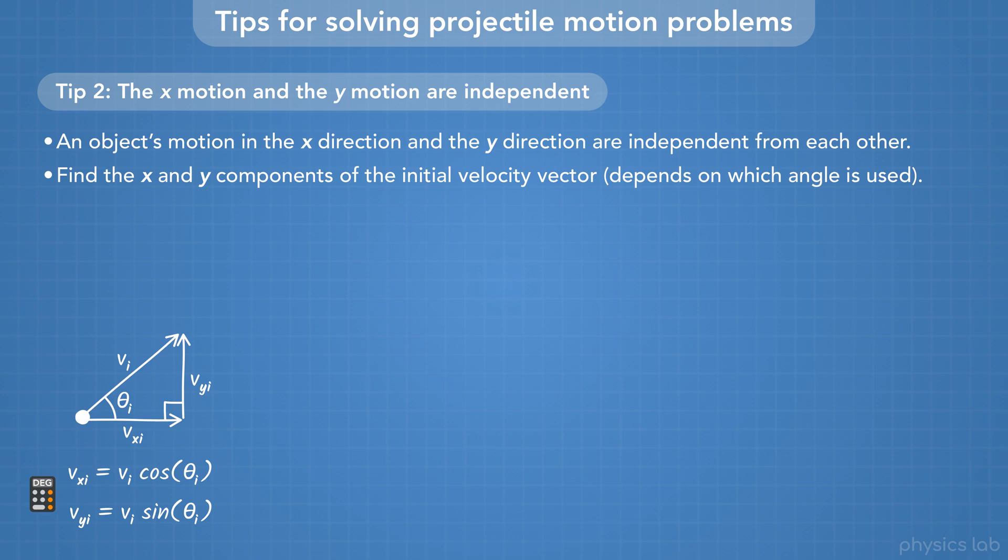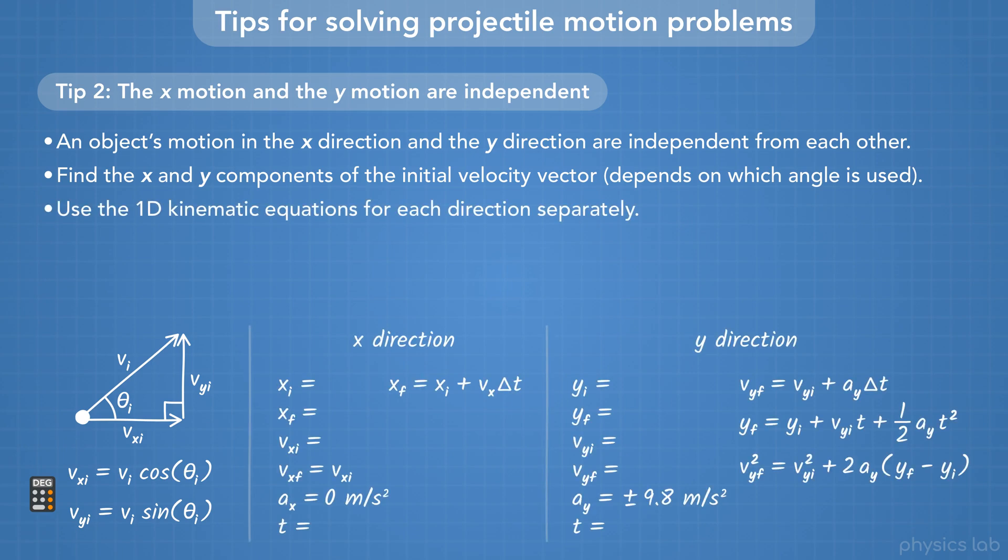Once we have the initial X and Y velocities, we can use the 1D kinematic equations for each direction separately. But remember that time is the same for both directions. So the value of T is the same in the X and Y equations at the same moment in time, and we can use the time variable as a link between the X and Y equations.